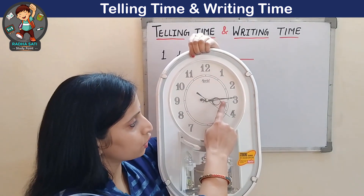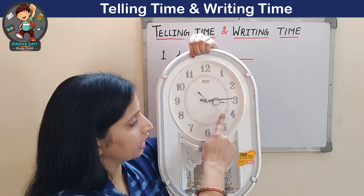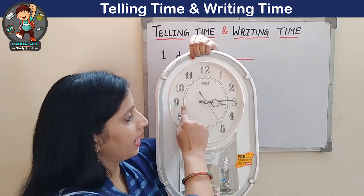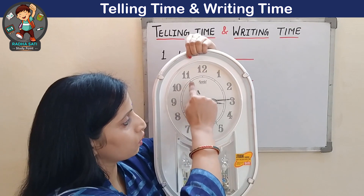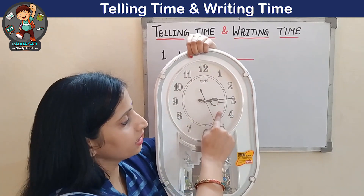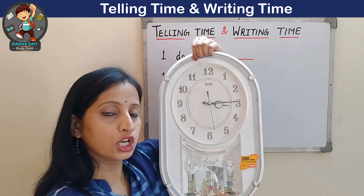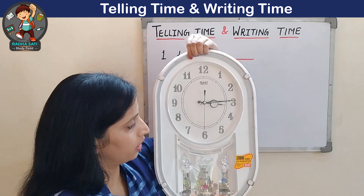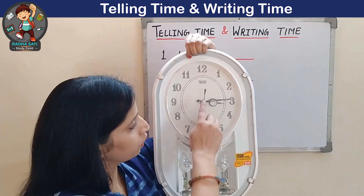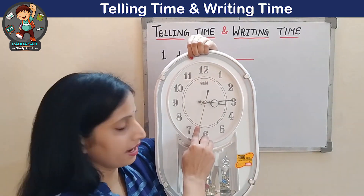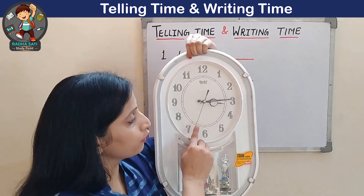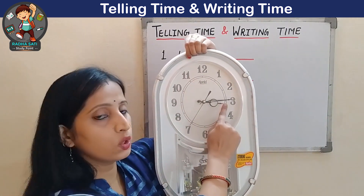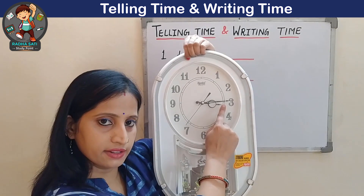These hands always keep moving in this direction — it is called clockwise rotation. The second hand moves faster than the other two hands.